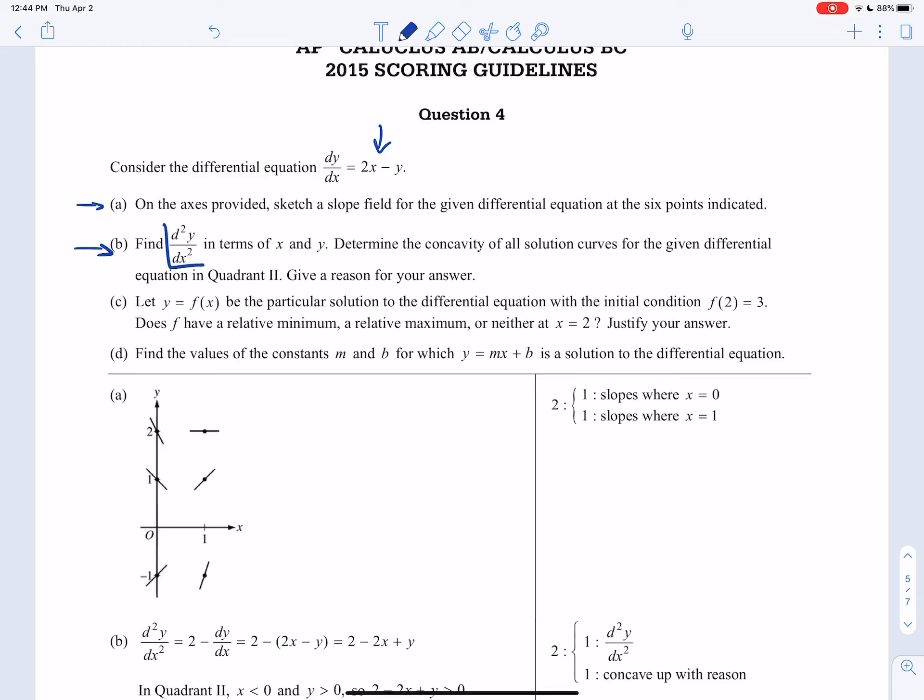Part B, they ask us to find the second derivative. So here's what you guys do. dy/dx is equal to 2x minus y. You take the derivative one more time, with respect to that variable. So the derivative of 2x is just 2dx minus the derivative of y is just dy. And then you're going to divide both of those by dx again. Some of you know how to cut your corners, and that's fine.